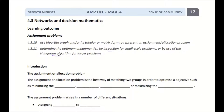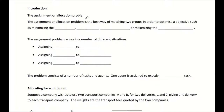So let's start with the introduction of assignment or allocation problems. An assignment or allocation problem is the best way of matching two groups together so that you can optimize a certain objective. This objective can be different case by case — a common one is either we want to minimize the time, minimize the cost, or minimize the distance. But optimization is not only limited to minimizing; we can also use it to maximize something, for example to maximize the productivity of a machine.